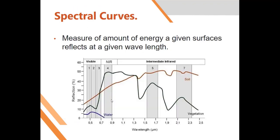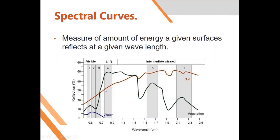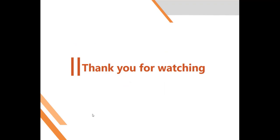When doing optical remote sensing, one of the guiding principles involves spectral curves. Vegetation reflects highly in the near infrared, while water reflects low. By interpreting spectral curves, we can map different materials on the earth's surface. For example, to map vegetation I'd focus on the near infrared band, while to map water I'd focus on a different band range.